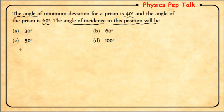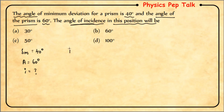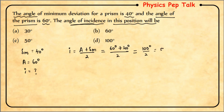Given: angle of minimum deviation δm = 40°, angle of the prism A = 60°. We need to find the angle of incidence I. At minimum deviation condition, the formula is I = (A + δm) / 2. Substituting: I = (60° + 40°) / 2 = 100° / 2 = 50°. Therefore option C is the correct answer.